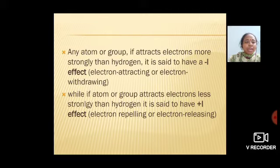Any atom or group that attracts electrons more strongly than hydrogen is said to have a -I effect (electron-attracting or electron-withdrawing), while if an atom or group attracts electrons less strongly than hydrogen, it is said to have a +I effect (electron-repelling or electron-releasing).